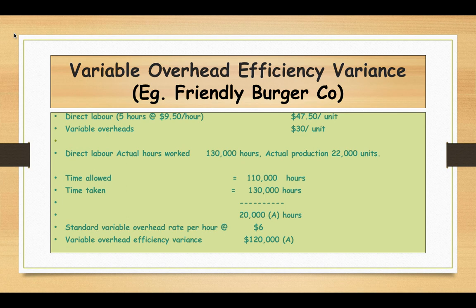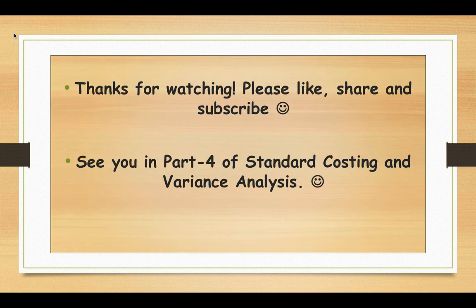We can cross-check our workings: the efficiency variance plus the expenditure variance must equal the cost variance. The efficiency variance is $120,000 adverse and the expenditure variance is $95,000 favorable. Together they net to $25,000 adverse, which matches the variable overhead cost variance we calculated. So our calculation is correct.